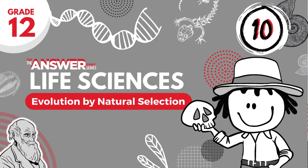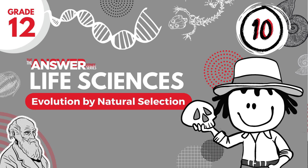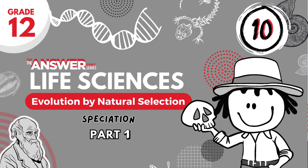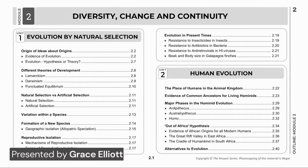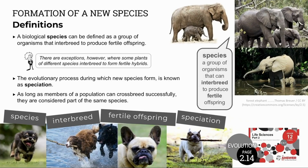Hello Grade 12s and welcome to the Answer Series Life Sciences videos based on our study guides. In this video we'll look at Part 1 of speciation, in other words the formation of a new species. We'll look at some definitions and the process of speciation with reference to allopatric speciation, which is caused by geographic isolation. Part 2 video will focus on examples of this speciation.